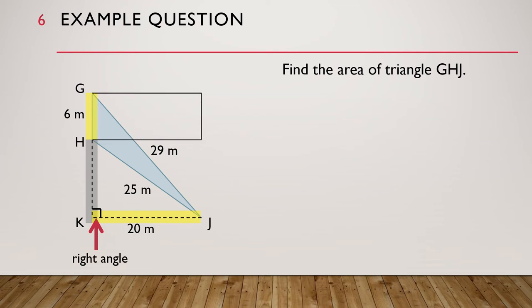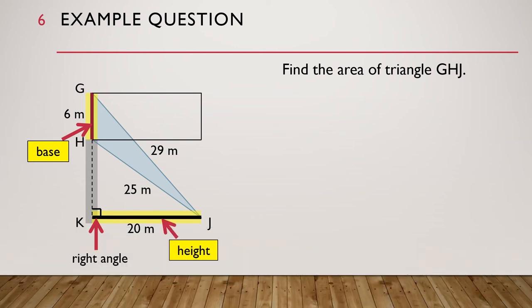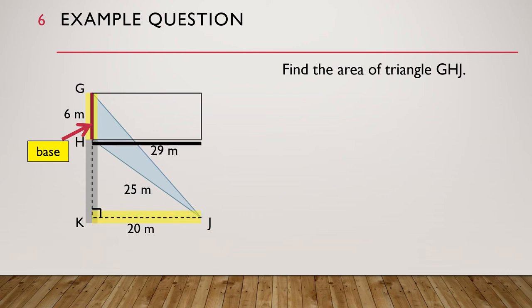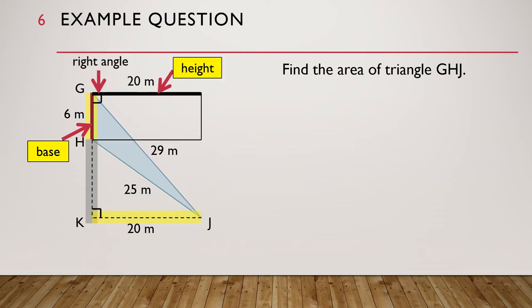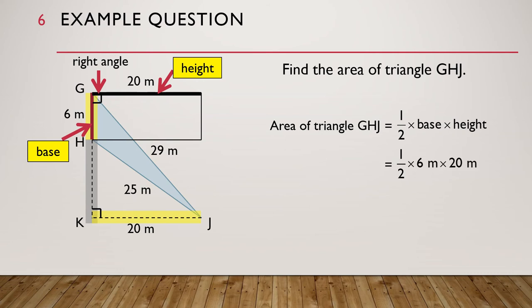Let's draw the related rectangle to confirm. So GH is the base of triangle GHJ, and this is the height of triangle GHJ. The height is perpendicular to the base. So the area of triangle GHJ is equal to half times base times height, which is equal to half times 6 meters times 20 meters, and that is equal to 60 square meters.